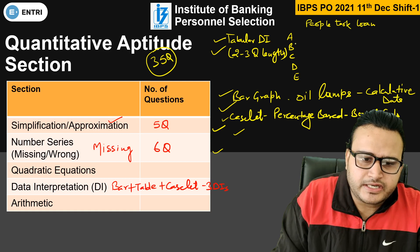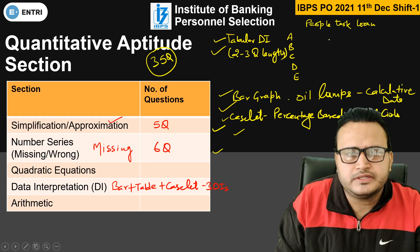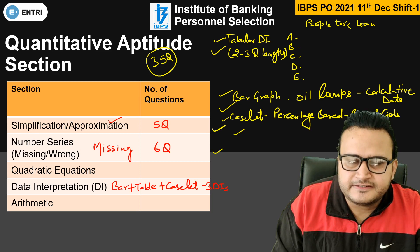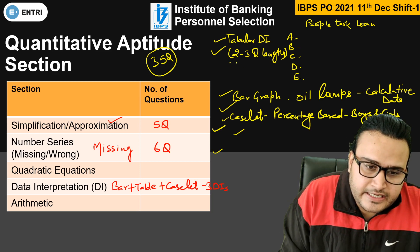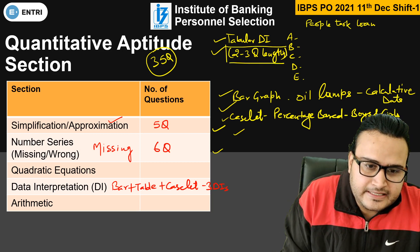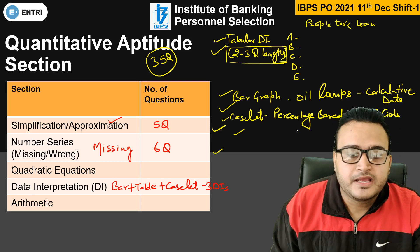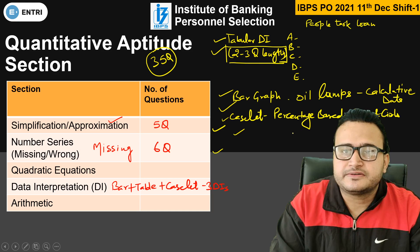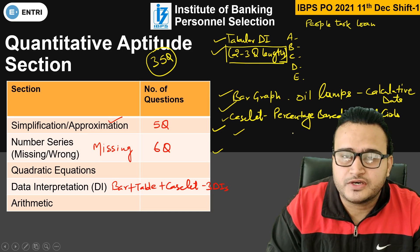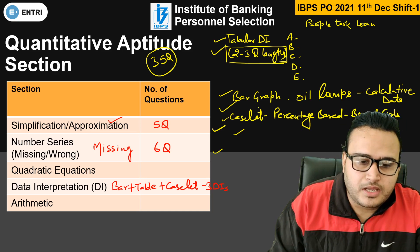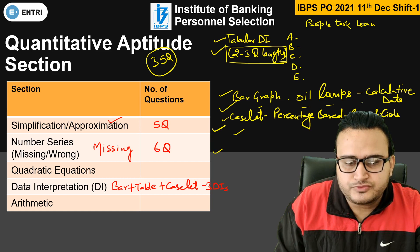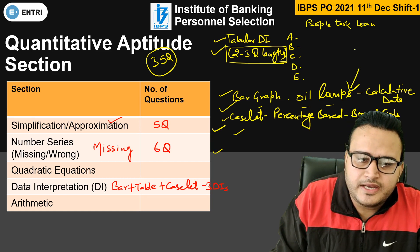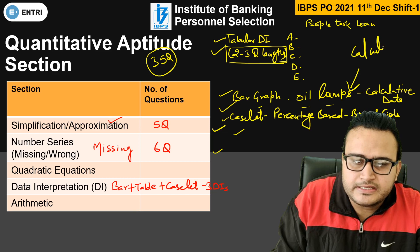Talking about tabular DI, people took loans — the ratio was given for cities A, B, C, D, and E. Students are saying 2 to 3 questions were lengthy in nature in tabular DI, and they took some time to solve those questions. Please let me know in the comment section what the scenario was with you. Talking about the bar graph, oil lamps were given as the theme. It was also a calculative DI.